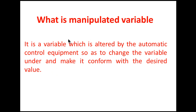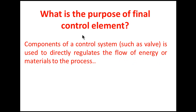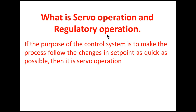What is manipulated variable? It is a variable used to alter the value of the control variable. For example, if we are controlling the temperature of water using steam, then steam is the manipulated variable — we use steam to control the water temperature which is our set point. What is the purpose of the final control element? A control valve is a device used to regulate the flow of liquid or gas. The final control element directly regulates the flow of energy or material to the process.